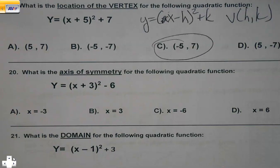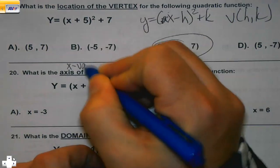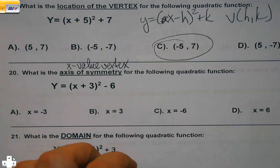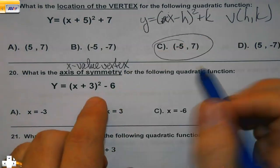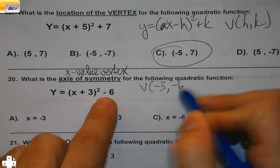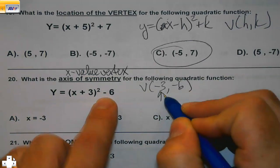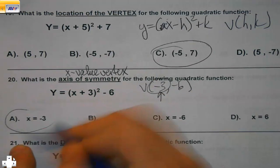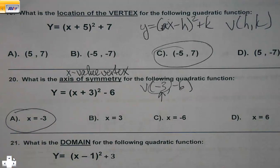Same type of thing with axis of symmetry. Axis of symmetry is just the x value of your vertex. So if I look at this — if my vertex is at negative 3, negative 6 — there it is. But be careful, that's your x value. If there happened to be a y equals in there, like in number two, you'd have to keep an eye out for that.